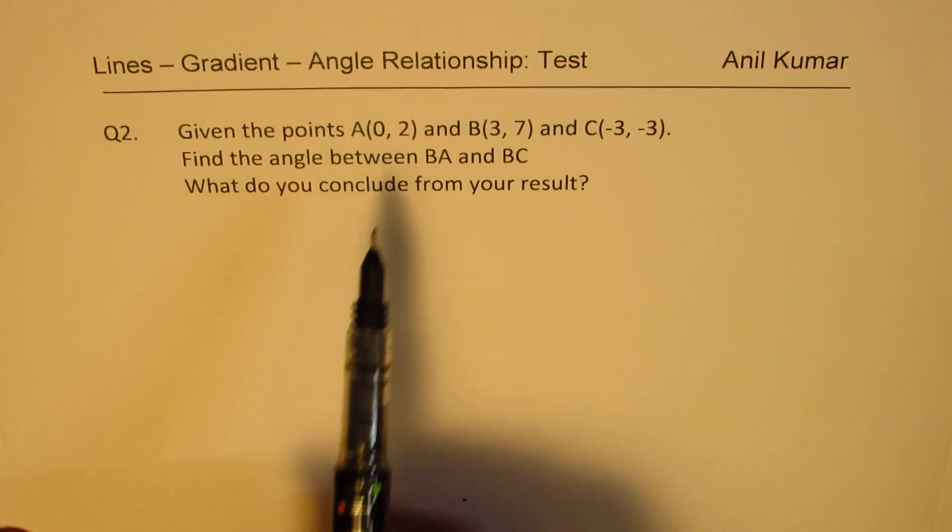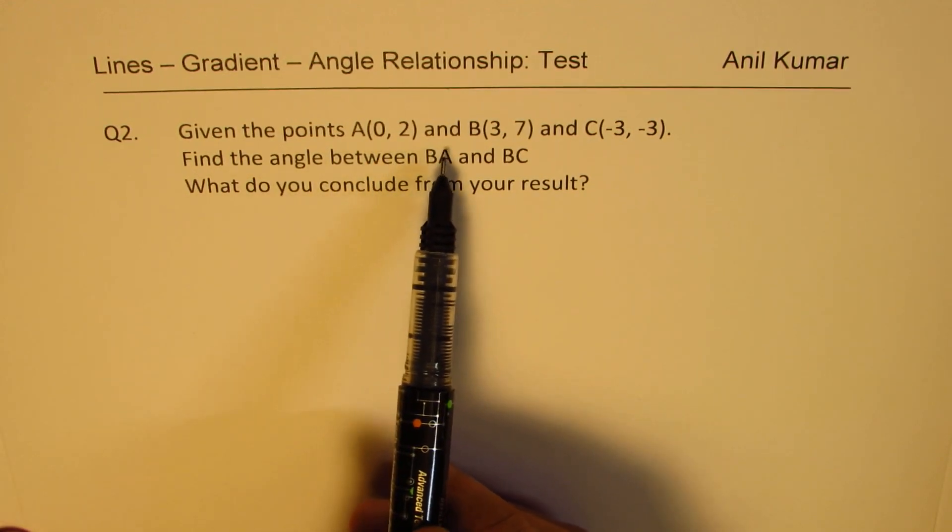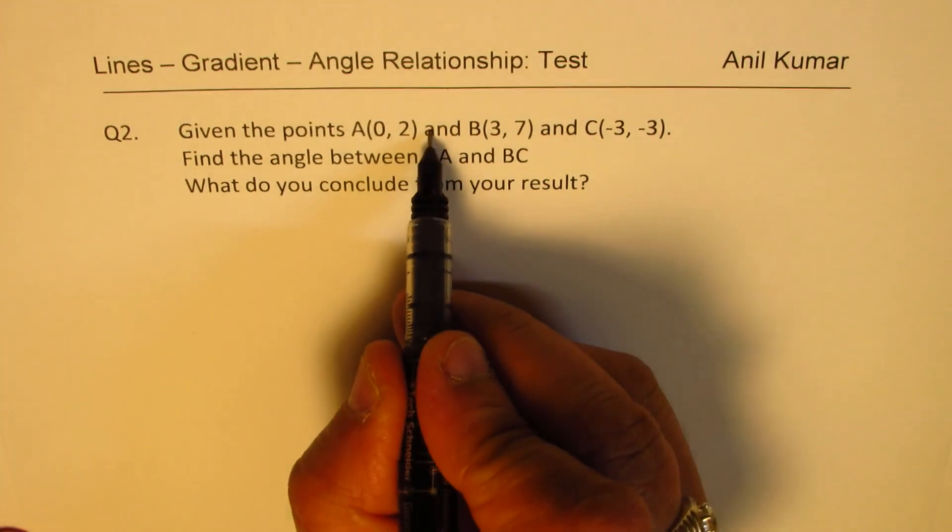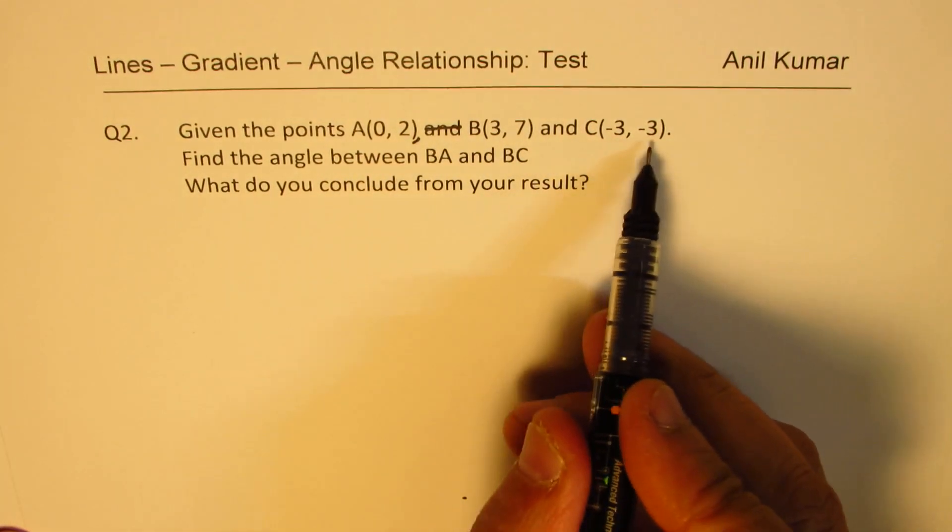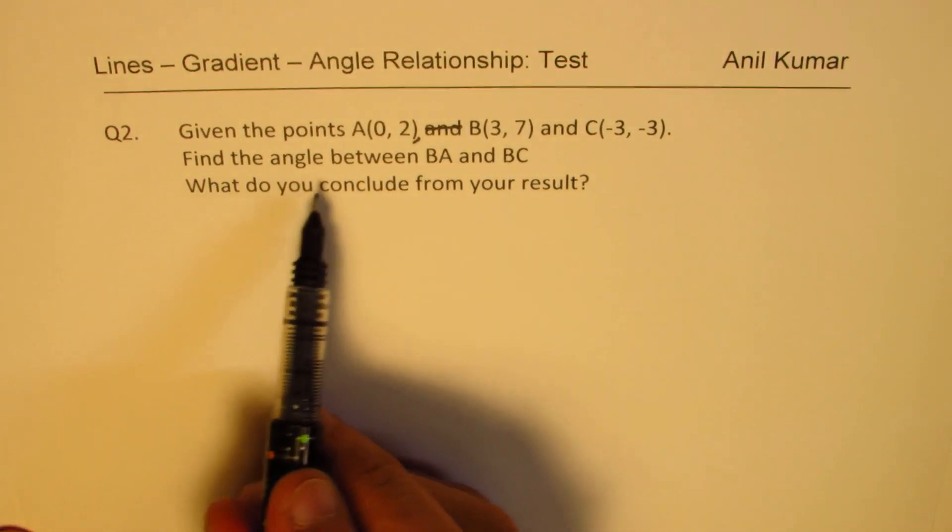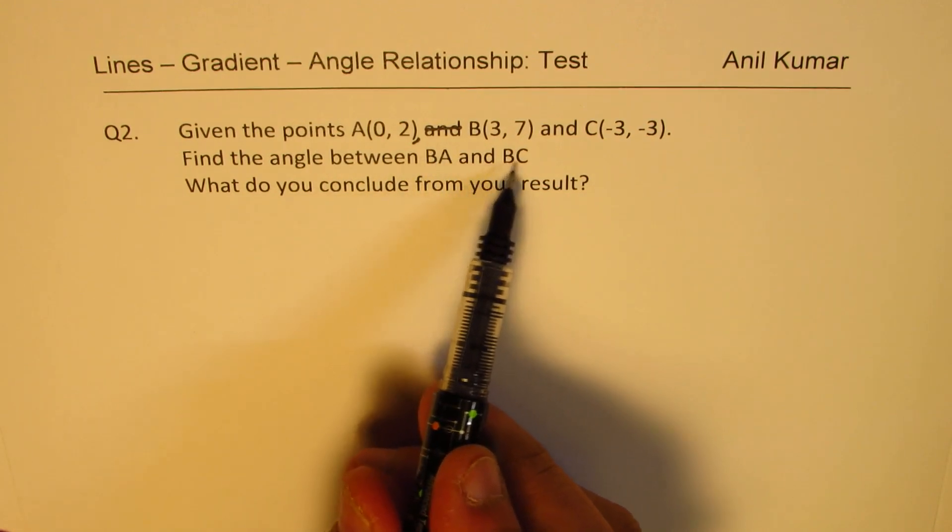Given the points A(0, 2) and B(3, 7) and C(-3, -3), find the angle between BA and BC.